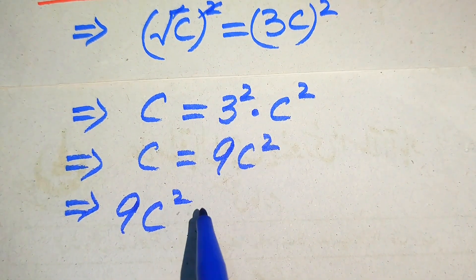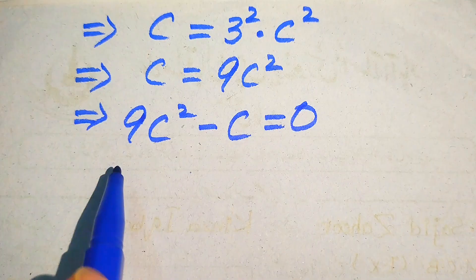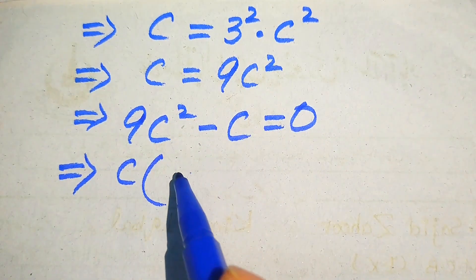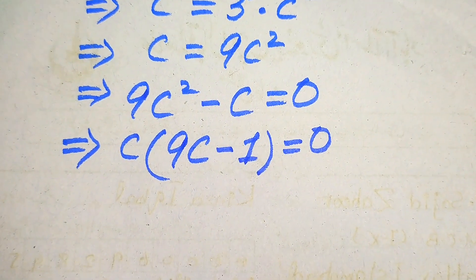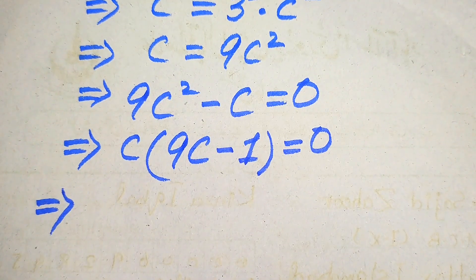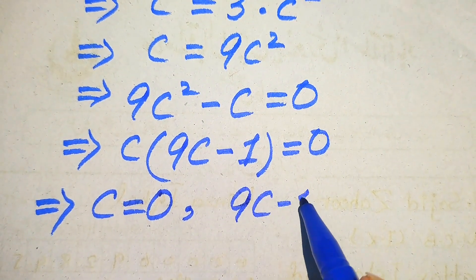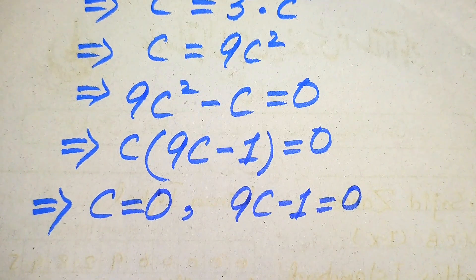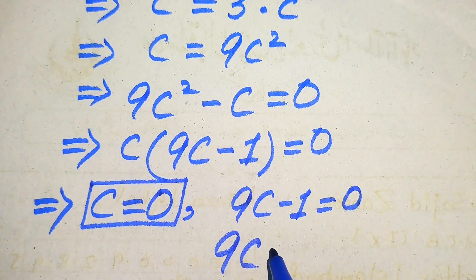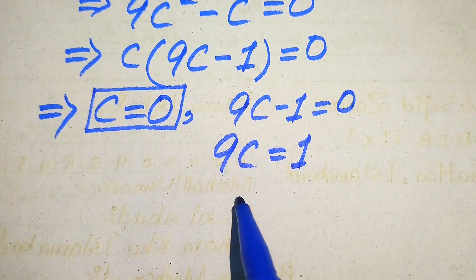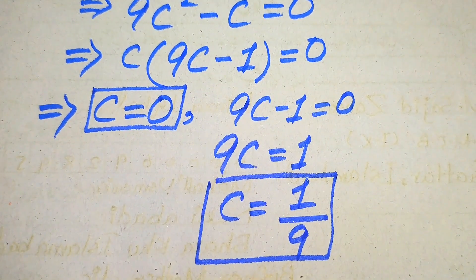This gives us c equals 9 times c squared. We move c to the right-hand side: 9c squared minus c equals 0. Both terms involve c, so we factor out c: c times (9c minus 1) equals 0. This gives two cases — the first case gives c equals 0, and the second case gives 9c minus 1 equals 0, so 9c equals 1, meaning c equals 1 over 9.